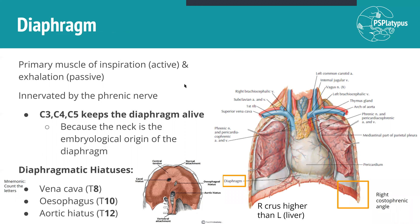Finally, briefly on the diaphragm — this is revision from last year. The diaphragm is the main muscle of inspiration and exhalation; when you breathe in, it contracts and opens up the thorax to accept air into the lungs. It's innervated by the phrenic nerve — C3, 4, 5 keeps the diaphragm alive — which means that if you have irritation of the diaphragm, pain will refer to the neck via the phrenic nerve. The main thing to remember is the diaphragmatic hiatuses, and the mnemonic is to count the letters: vena cava has 8 letters, so that's at T8; esophagus has 10 letters, so the esophageal hiatus is at T10; and aortic hiatus has 12 letters, so that's at T12.